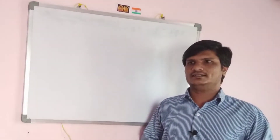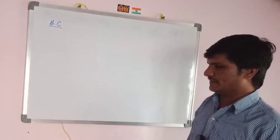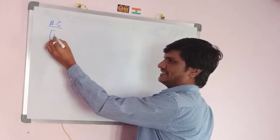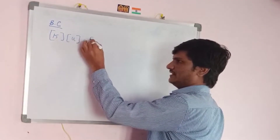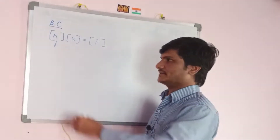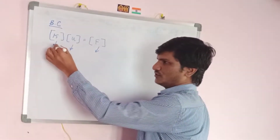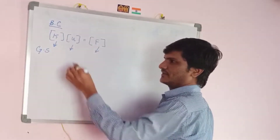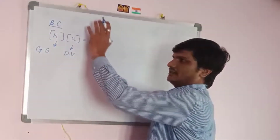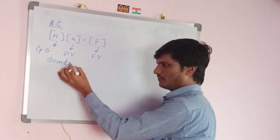In this video we will learn about boundary conditions in the finite element method. After assembling the global stiffness matrix, we form the finite element equation K·u = F, where K is the global stiffness matrix, u is the displacement vector, and F is the force vector. Once this equation is formed, you need to apply the boundary conditions.